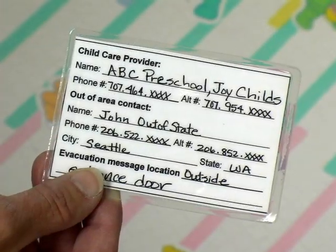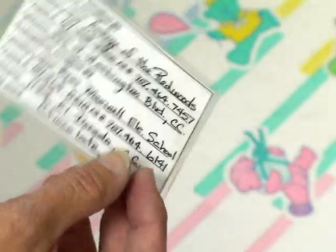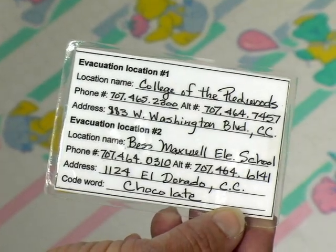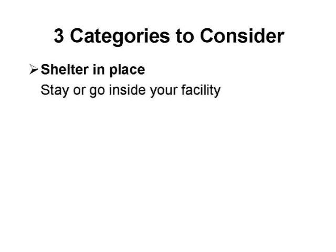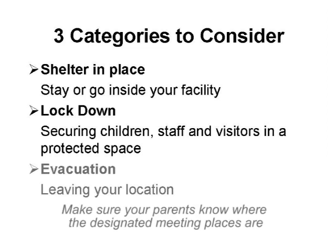The plan needs to be practiced with children, and parents need to be informed. Wallet cards are perfect to give parents the required information for your program. Emergency plans should respond to these three categories: shelter in place, lockdown, and evacuation, such as a fire drill or relocating to another building.